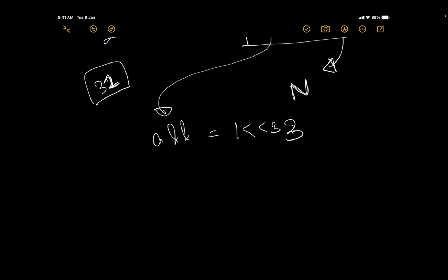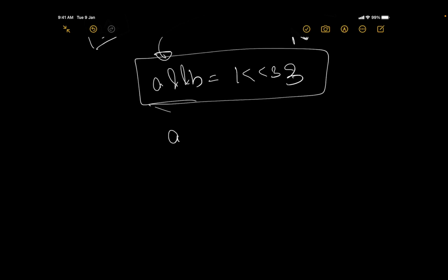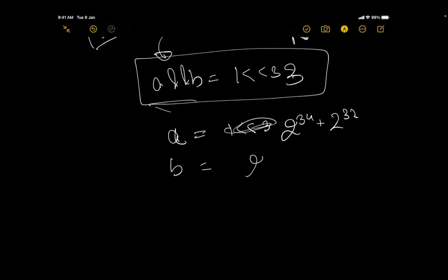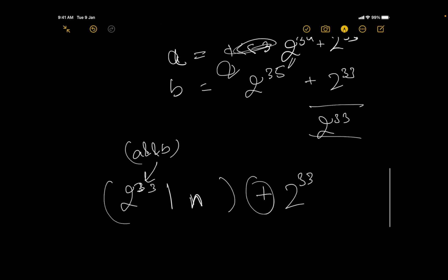We need distinct values for a and b — we can't set both to 2^33. We know that ANDing two numbers where different bits are set gives zero for those bits. So set a = 2^34 + 2^33 and b = 2^35 + 2^33. The extra bits (2^34 and 2^35) cancel out, so a AND b = 2^33. Then (a AND b) OR c = 2^33 OR n, which is x.